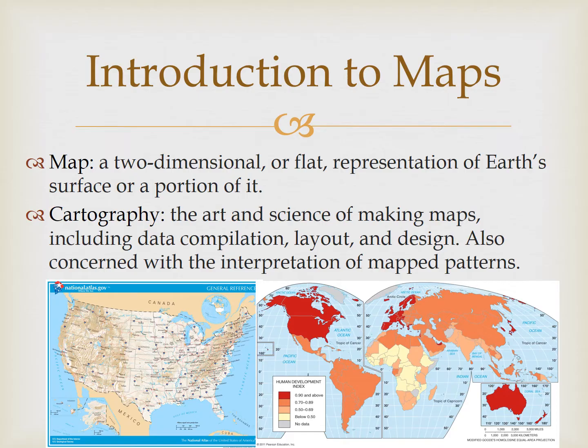A map is a two-dimensional, or flat, representation of Earth's surface, or a portion of it. The process that creates maps is known as cartography, which is the art and science of making maps, including data compilation, layout and design. It's also concerned with the interpretation of mapped patterns. So someone who makes maps is a cartographer.